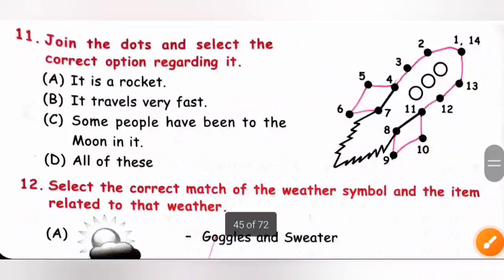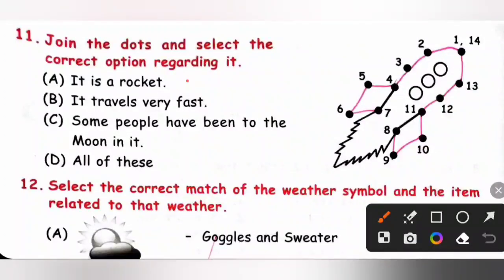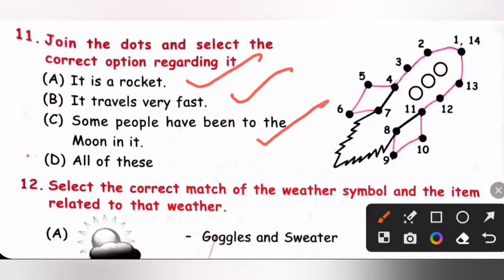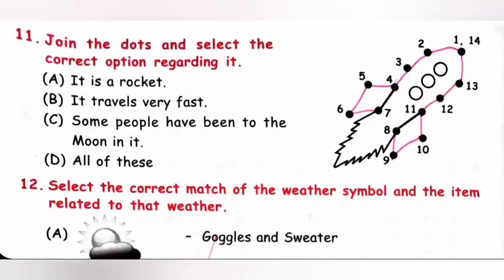Question 11: Join the dots and select the correct option. The image formed is a rocket. It travels very fast and some people have been to the moon in it. So all of these — option D is the correct answer.